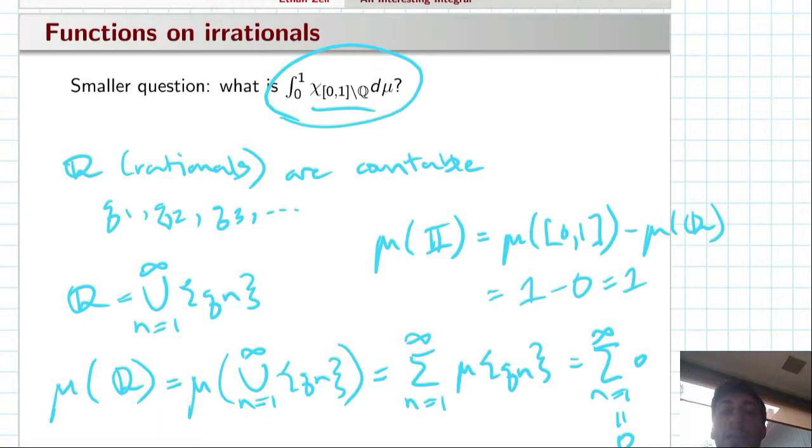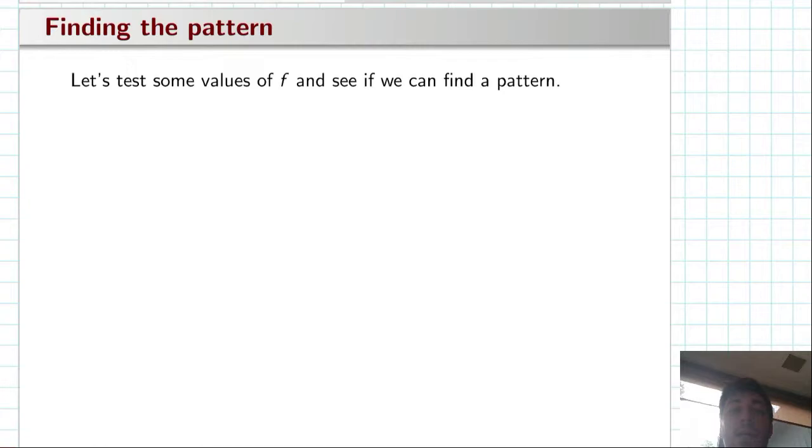So all of that is to say that this integral, where we're looking at the indicator function on the irrationals, is really just measuring out one. Maybe we can test some values of f and see if we can find some kind of pattern. Let's test any of the values along our interval. Let's test maybe some irrational number slightly larger than 0.5.